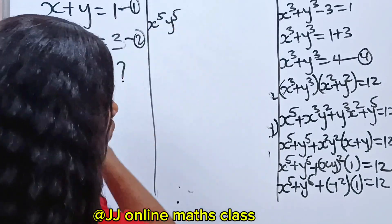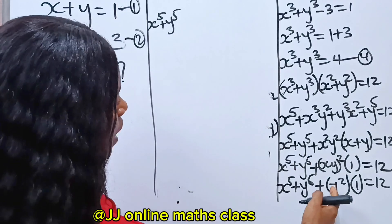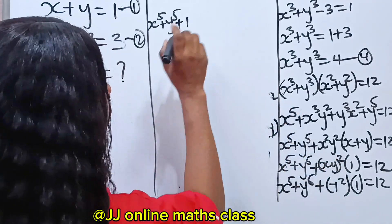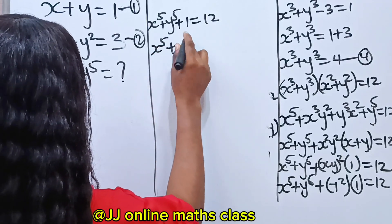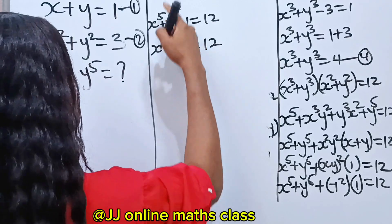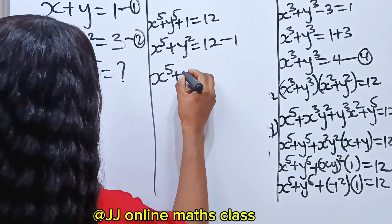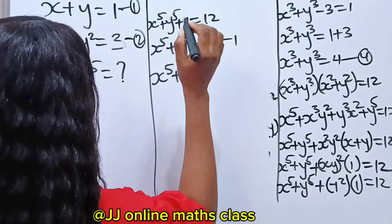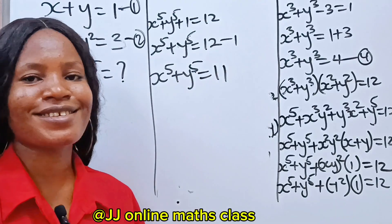So we have x to the power of 5 plus y to the power of 5 plus 1 equals 12. Moving the 1 across, x to the power of 5 plus y to the power of 5 equals 12 minus 1, which equals 11. And that is our solution.